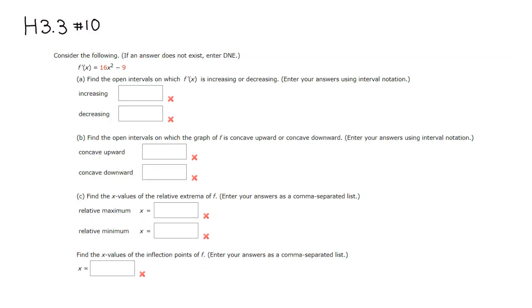Since we're talking about increasing and decreasing, we have to look at its derivative. So we take the derivative one more time. We take the derivative with respect to x, so we have f double prime of x, which is equal to 32x.